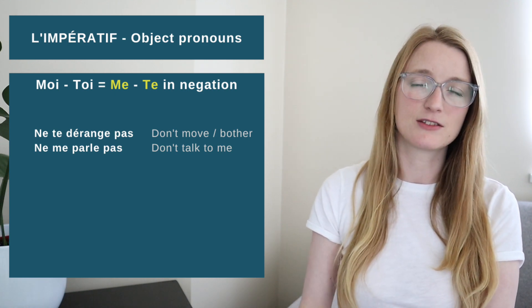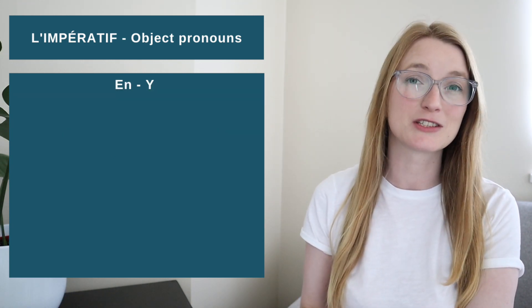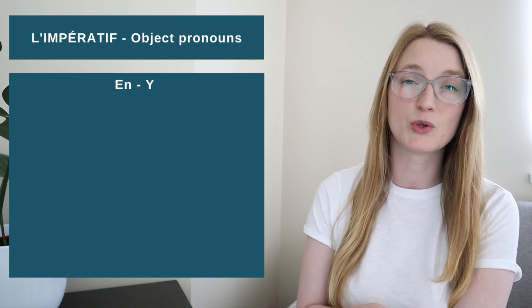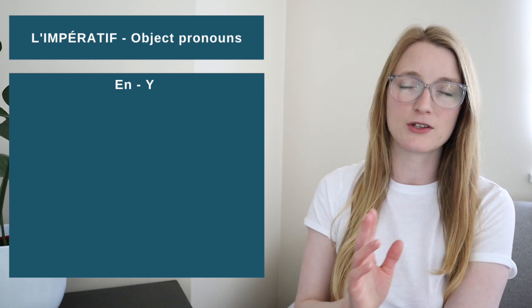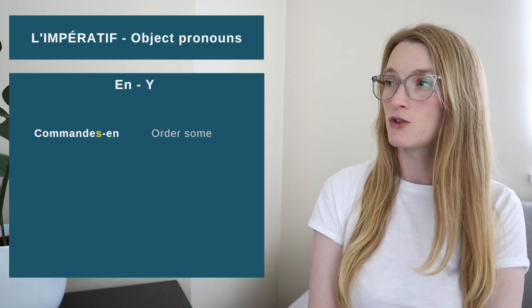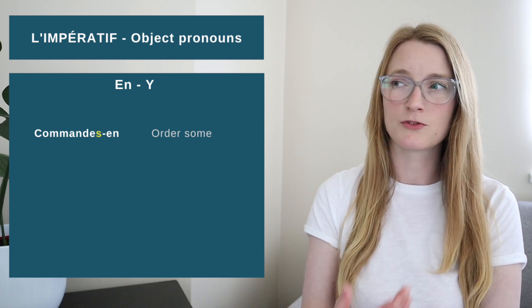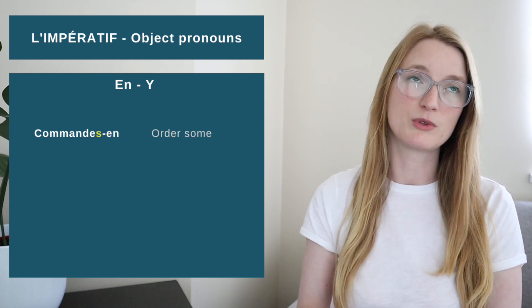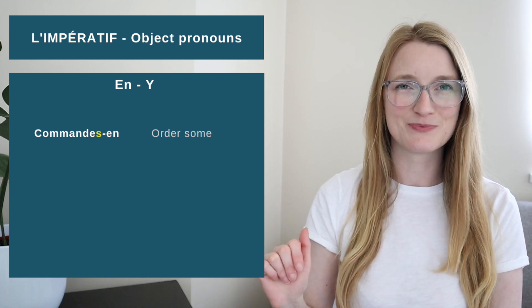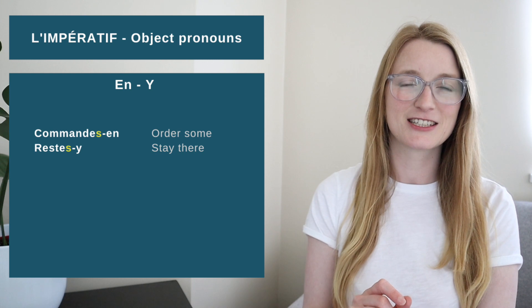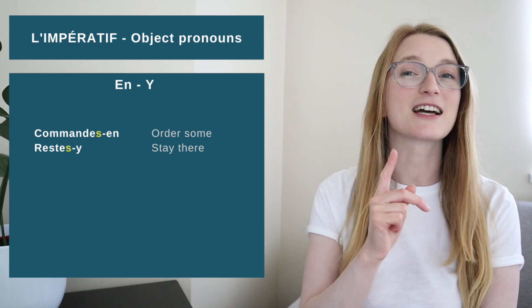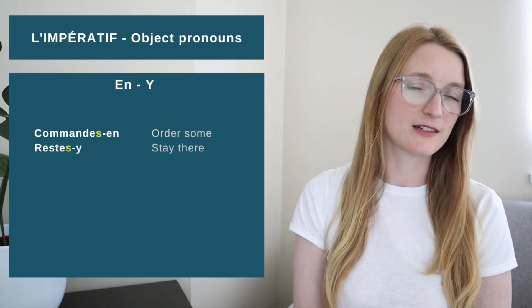Now when the pronunciation changes the spelling. I told you that verbs ending in ER when conjugated with Tu, we are not going to keep the S. We only keep the E. But when we have En or Y after, we are going to keep the S in this case and this case only. Let's see. If we say Order some, we are going to have Commandes-en. If we don't add the S, it's not possible, it's not a good pronunciation in French. So we add the S, or we keep the S technically, to have a good pronunciation. Same thing, for example, if we say Stay there, so there is a place so it's going to be Y, and we have Restes-y.